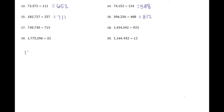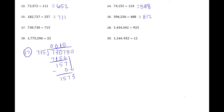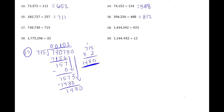Number seventeen: 730,730 divided by 715. 715 can't go into 7 or 73, but could go into 730 one time. Subtract to get 15, bring down the 7. 715 can't go into 157, so put a 0 and bring down the 3 to get 1,573. 715 goes into 1,573 twice — that's 1,430. Subtract to get 143, bring down the 0 to get 1,430. 715 goes into 1,430 twice with no remainder. Quotient is 1,022.